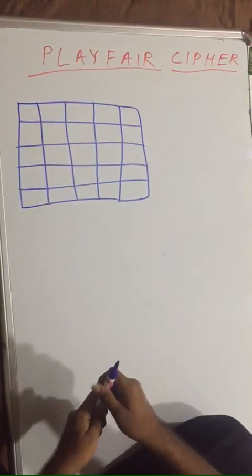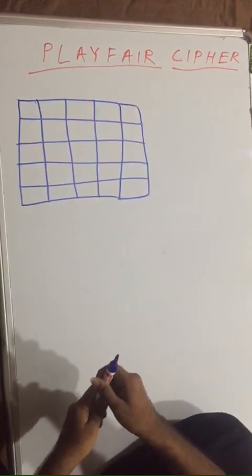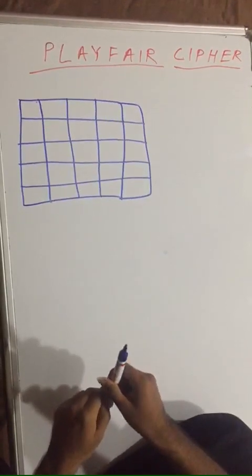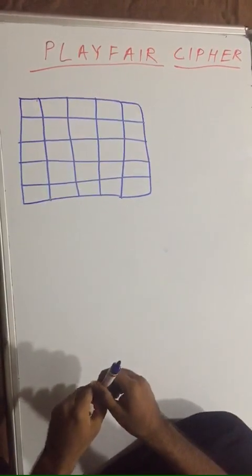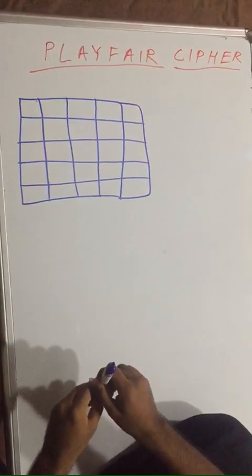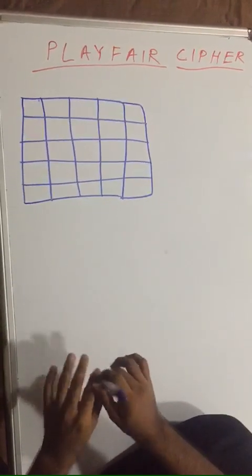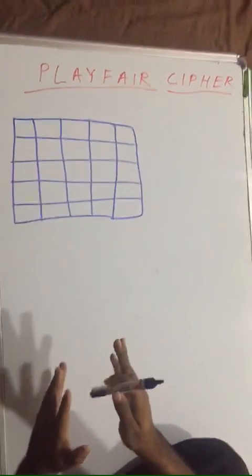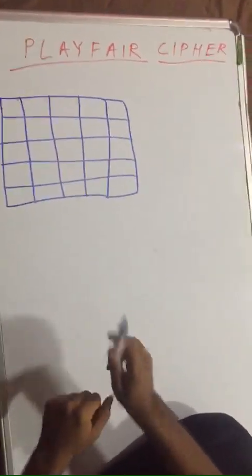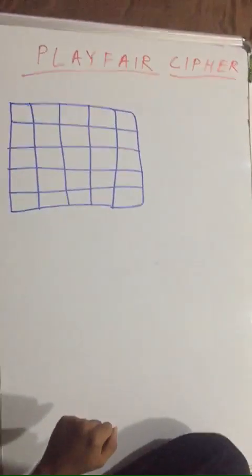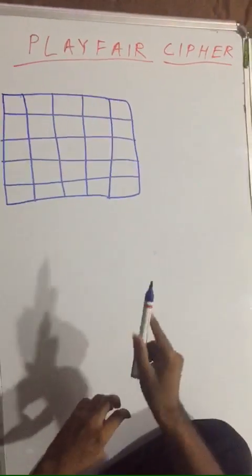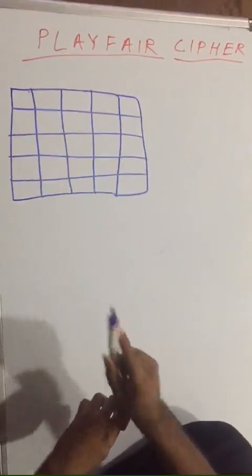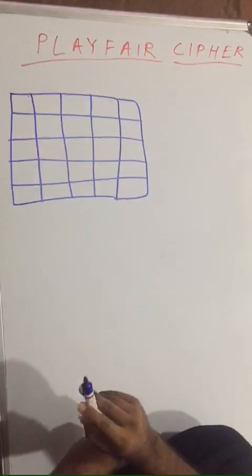Hello friends, welcome. In this lecture we are going to learn about the Playfair cipher. There are basically seven to eight rules and I will walk you through those rules before solving any example. The first rule is that the Playfair cipher only works in a five-by-five matrix.